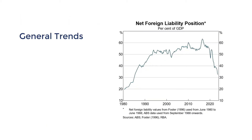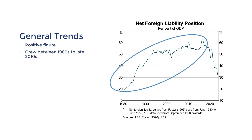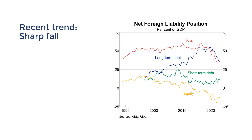Now let's talk trends. The general trend in Australia's net foreign liabilities is that it is a positive figure, meaning we tend to take on more debt and equity than we lend and invest abroad. This grew rapidly from the 1980s to the late 2010s, clearly led by growth in foreign debt. The effects include worsened investor confidence, exchange rate volatility, and the debt trap scenario. However, more recently, Australia's net foreign liabilities have fallen sharply to 32% of GDP — the lowest level since the mid-1980s.